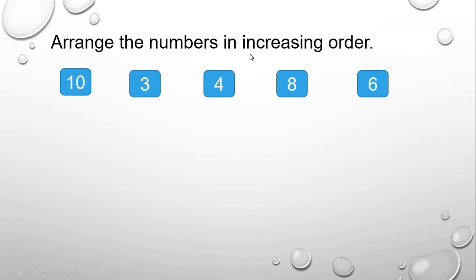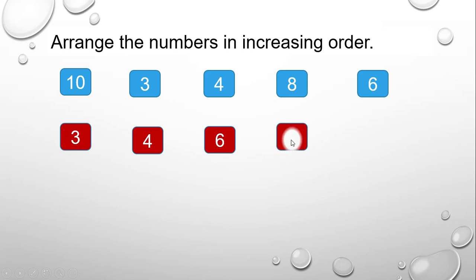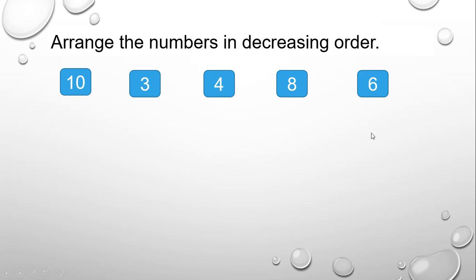Now let's arrange the numbers in increasing order. Remember, increasing order means we should begin from the smallest to the biggest. You can see that the smallest is 3, next is 4, then we go to 6, then 8, and finally 10. So we move from the smallest to the biggest.